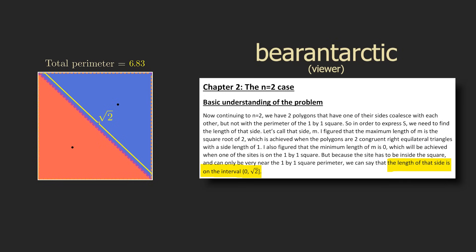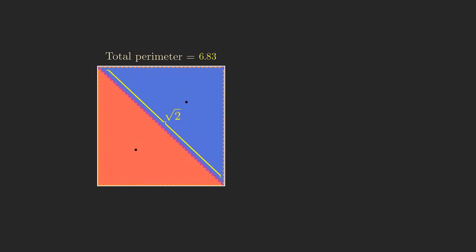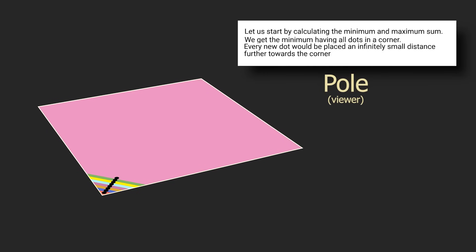Something we can do to get a foothold is find the minimum and maximum possible perimeters for a cell. Many of you identified a way to achieve this. If the sites go in a diagonal line towards one of the corners, for example,